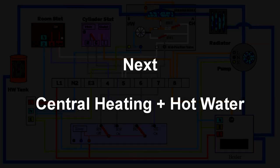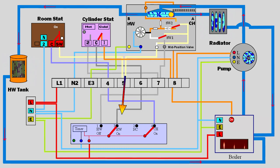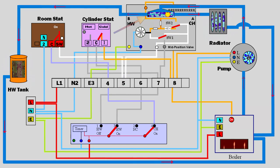Next, we will look at central heating and hot water together. As you can see, the heating and hot water thermostats are calling for heat. Now we select central heating and hot water from the controller. The pump and boiler start. The motor turns and starts to move the valve.